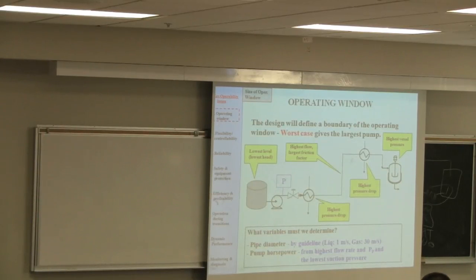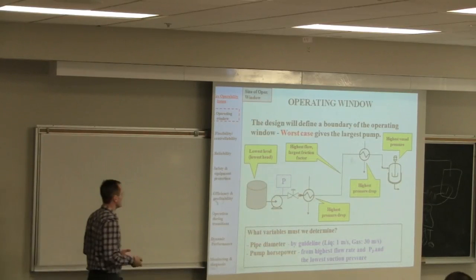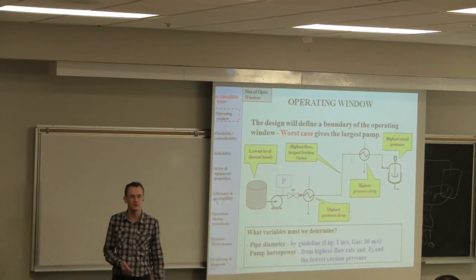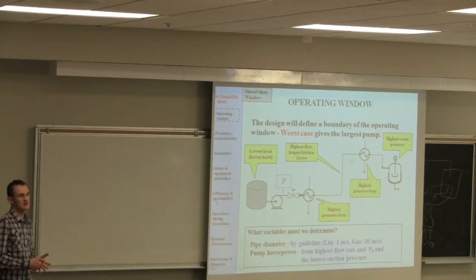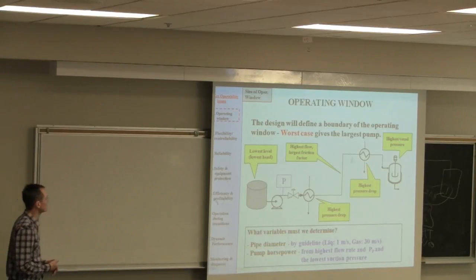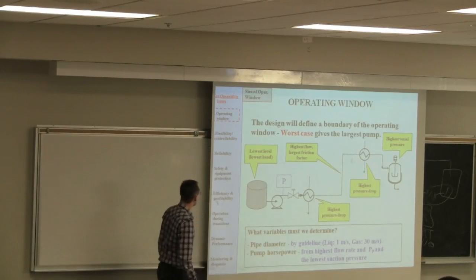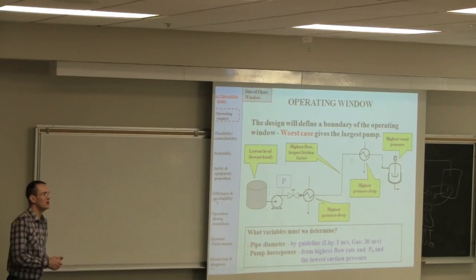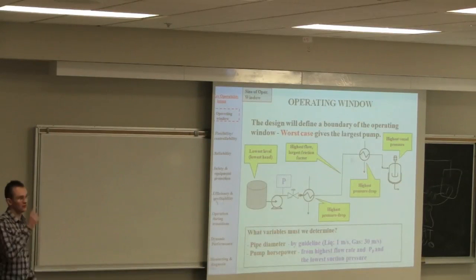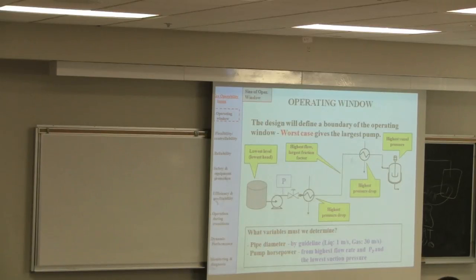This operability topic - there's actually eight subsections potentially we could look at. We're only going to be looking at the operating window of the process, understand what that's about, and then we'll talk a little bit about flexibility, operability, and reliability. I wanted to touch also on one aspect here on the operating window - starting up and shutting down the process system. That's really the extent of the time we have available. Then we'll look at troubleshooting in next week's class, and there will be a final tutorial on that topic.